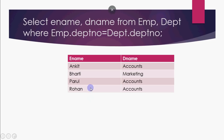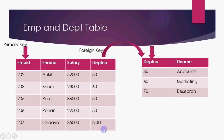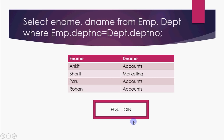The result will show records for Ankit, Bharti, Parul, and Rohan. The last record — Shaya — will not appear because its department number is null, and null does not match any value. So it will not be displayed. For now, the first four records are shown with their matching department names. We will discuss inner and outer joins further in the next video.